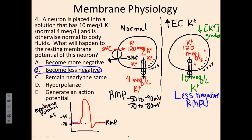Going through the other responses: the first option says the membrane potential would become more negative — that's not the case, because we said it will be less negative, meaning we're going higher on the membrane potential scale. We can also eliminate the answer that it would remain the same. For the option 'hyperpolarize' — hyperpolarization means going below or more negative than the resting membrane potential. That would mean a resting membrane potential lower than where we started, and that's not what we see here, so that answer is eliminated.